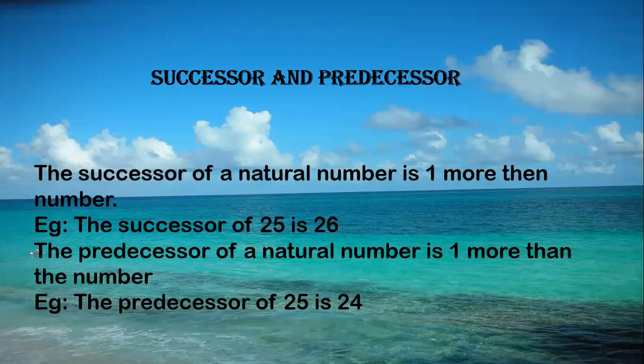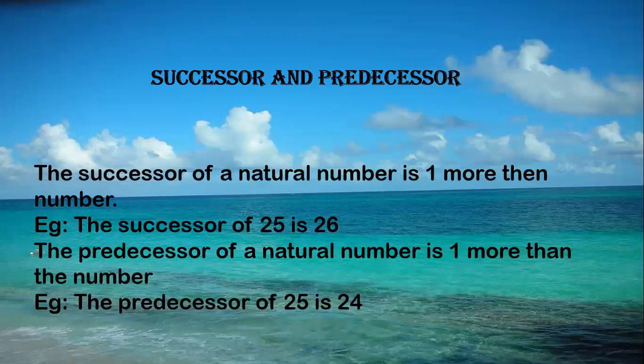Successor and predecessor: The successor of a natural number is 1 more than the number — for example, the successor of 25 is 26. The predecessor of a natural number is 1 less than the number — for example, the predecessor of 25 is 24.